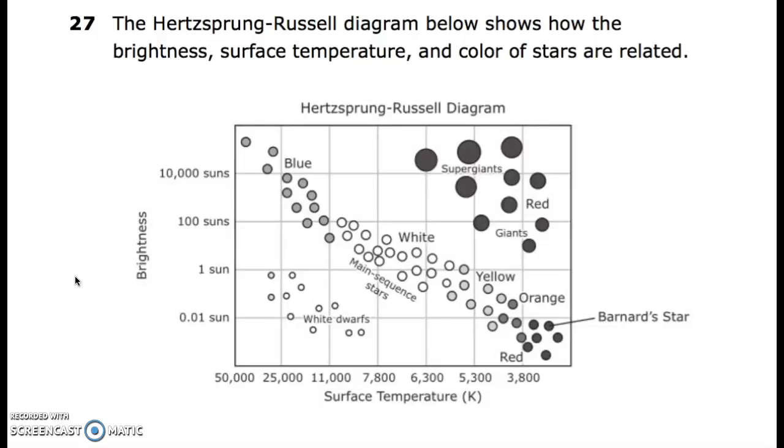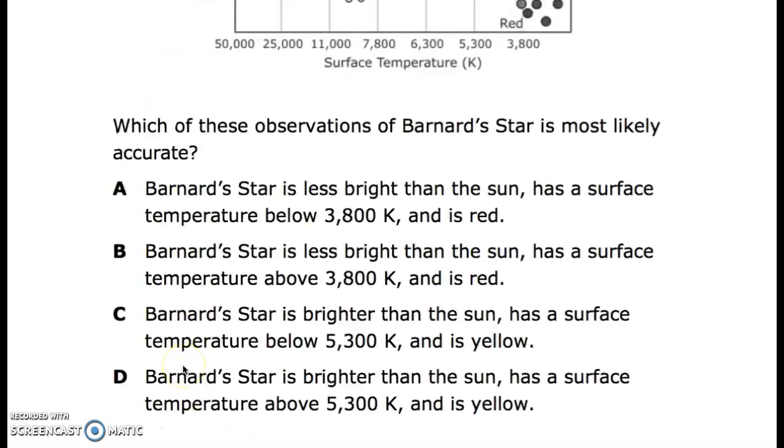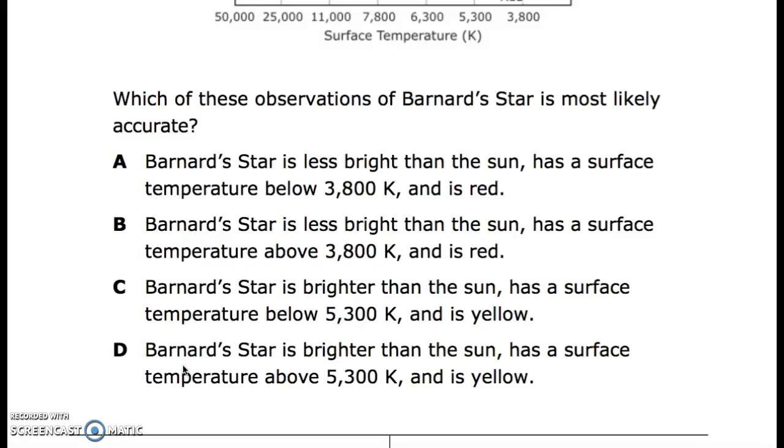27. The Hertzsprung-Russell diagram below shows how the brightness, surface temperature, and color of stars are related. Here's the brightness. Surface temperature is identifying Bernard's star. Red, orange, yellow, white, main sequence stars, blue. White dwarfs down here, supergiants, and red giants. Which of these observations of Bernard's star is most likely accurate? A. Bernard's star is less bright than the sun, has a surface temperature below 3,800 Kelvin, and is red. B. Bernard's star is less bright than the sun, has a surface temperature above 3,800 Kelvin, and is red. C. Bernard's star is brighter than the sun, has a surface temperature below 5,300 Kelvin, and is yellow. Bernard's star is brighter than the sun, has a surface temperature above 5,300 Kelvin, and is yellow.